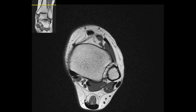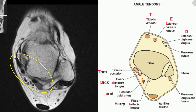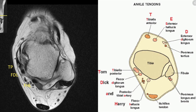Now we look at the tendons, again going from superior to inferior. The first compartment is the medial compartment, which consists of three tendons. The medial most tendon — anterior or posterior — is the tibialis tendon, so this is the tibialis posterior tendon. It is like Tom, Dick and Harry: tibialis posterior, then flexor digitorum longus, then flexor hallucis longus. Between these two tendons you have the posterior neurovascular bundle.